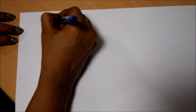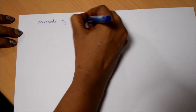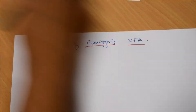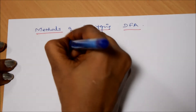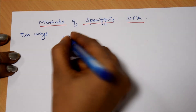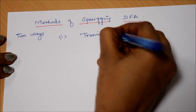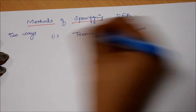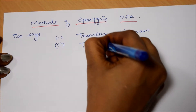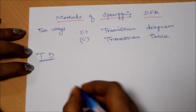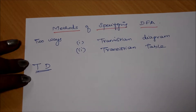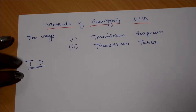Method of specifying DFA. This quintuple DFA can be represented in two ways. One is the Transition Diagram, and another is the Transition Table. The transition diagram is a directed graph where states are nodes and edges represent the transition from one state to another state.